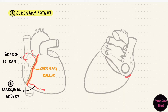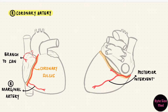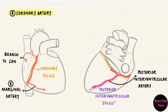Then the right coronary artery goes posteriorly — on the back of the heart it's still in the coronary sulcus — and gives off another branch to the atrioventricular node. Finally, it ends with a big branch called the posterior interventricular artery, which lies in the posterior interventricular sulcus. Those are the main branches of the right coronary artery.